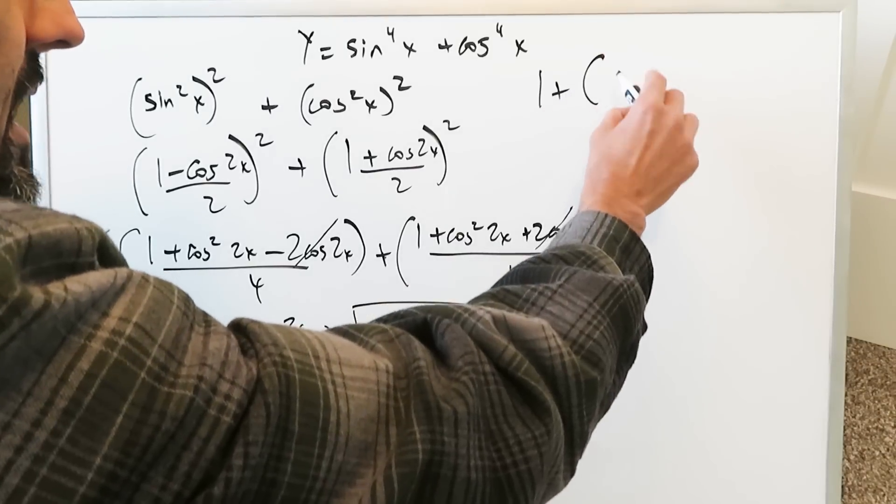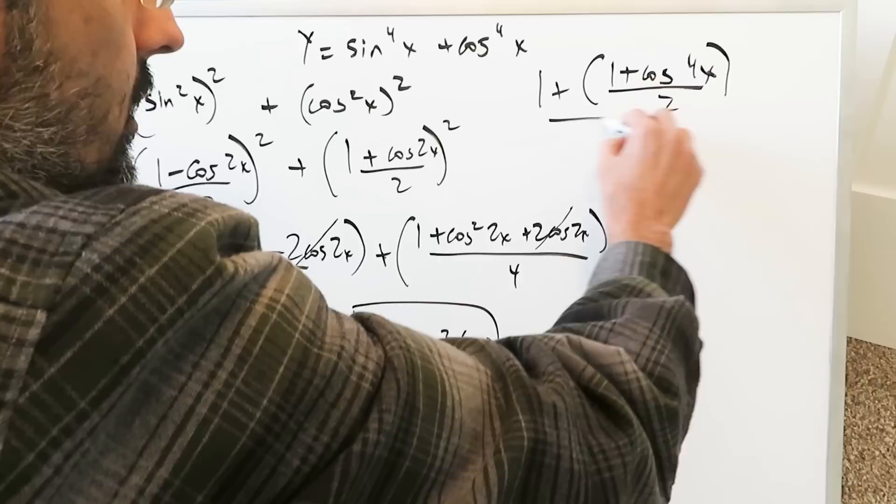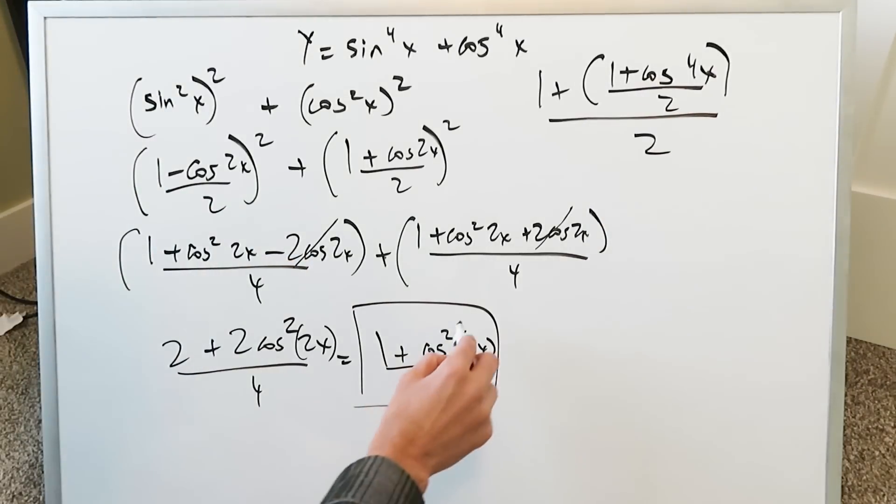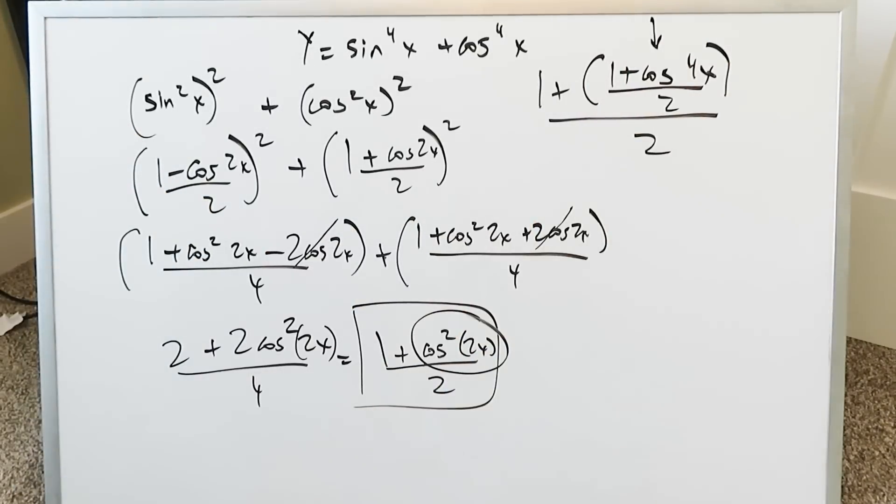I would have a 1 plus and then I would have a 1 plus cosine now 4x over 2 all over 2. This part right here became this part in the parentheses. You have to be careful here.